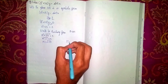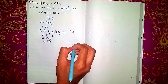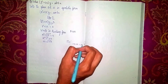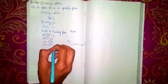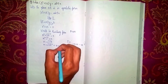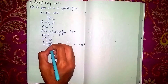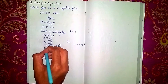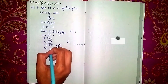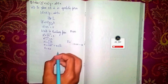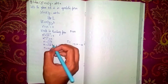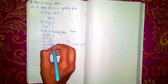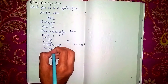We consider i squared equals minus 1. So minus 25 equals i squared times 25, meaning m equals the square root of 25i squared, which gives m equals plus or minus 5i. The roots are in the form a plus or minus ib, where a equals 0 and b equals 5.